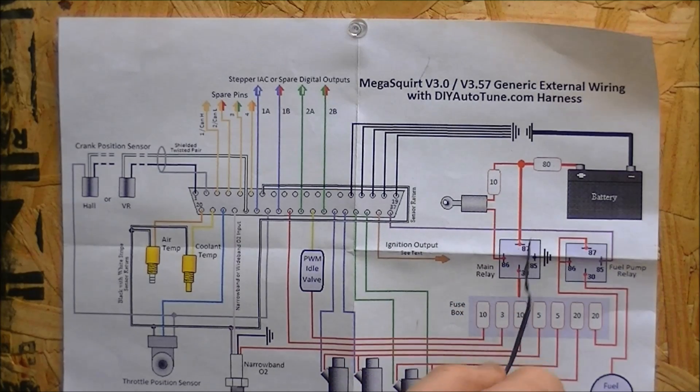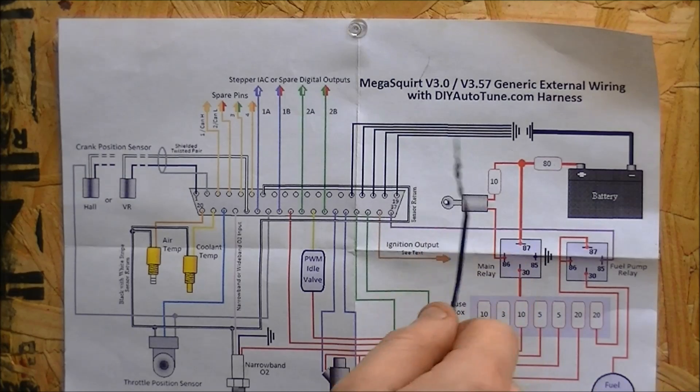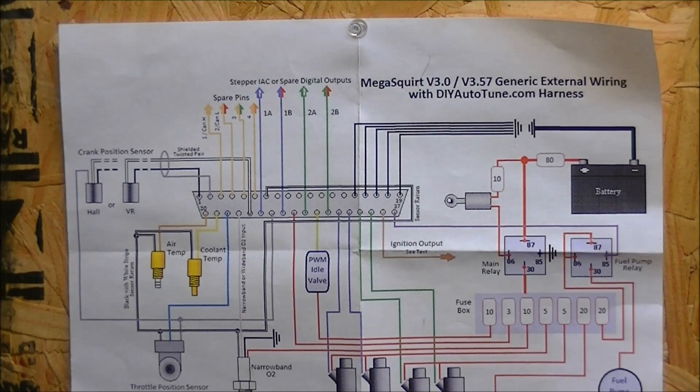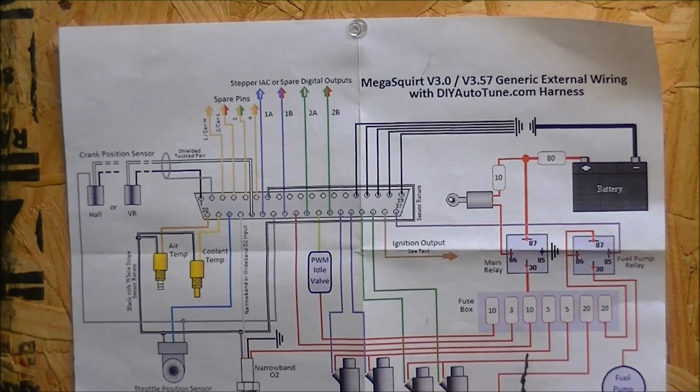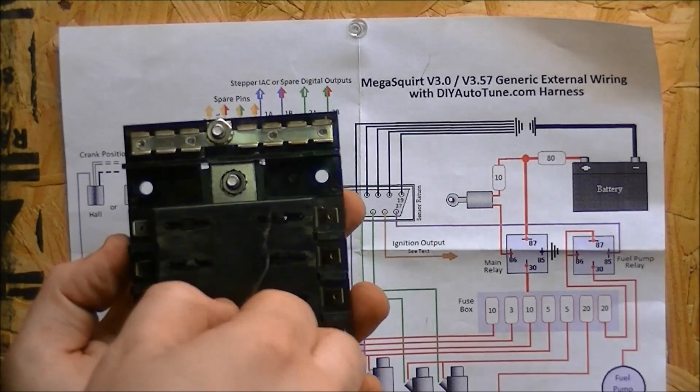You're going to come from that and that's what's going to power this relay on, and then you're just going to ground it to the chassis somewhere. The way this works is when that comes on, which doesn't pull much amperage—I think it's like three, four, maybe five amps to the max on the signal side—that's going to close that relay.